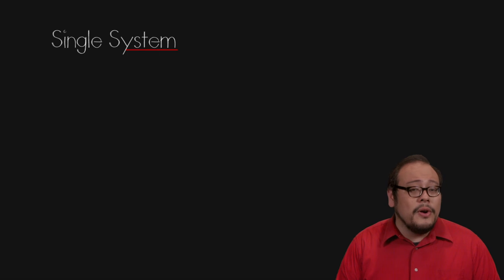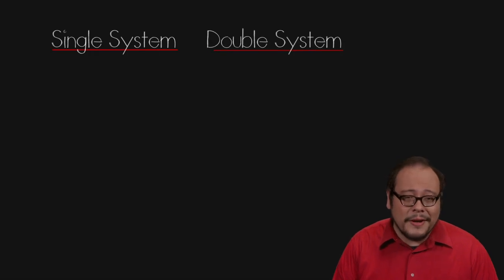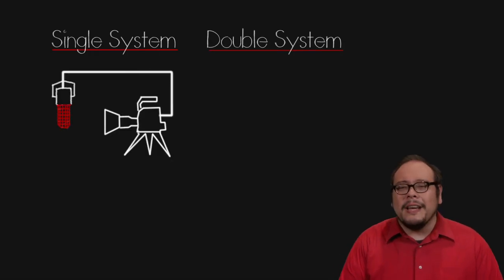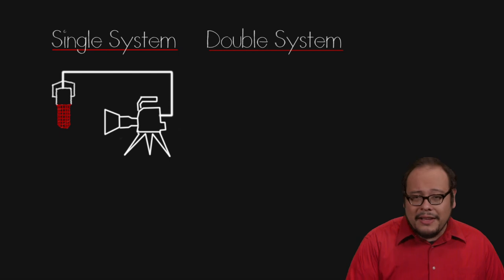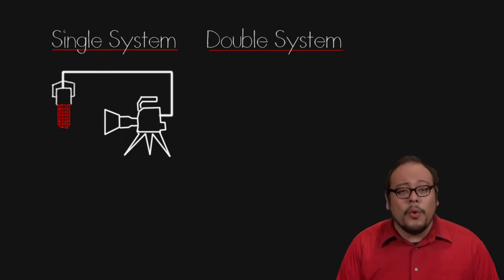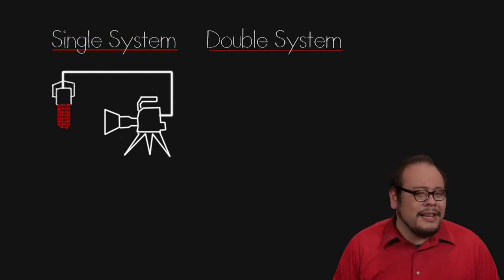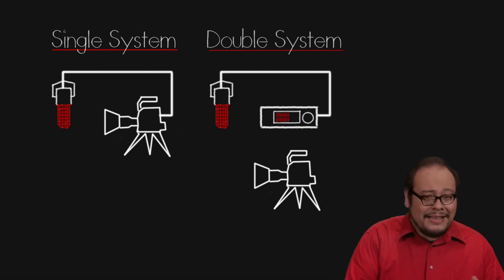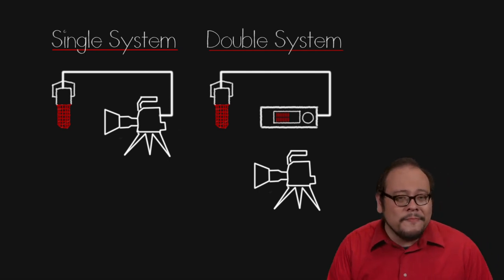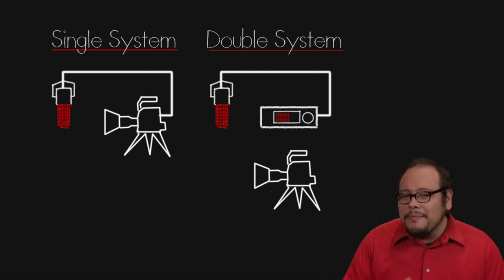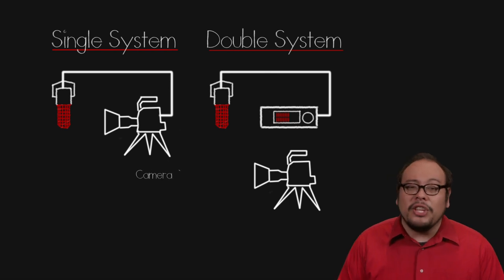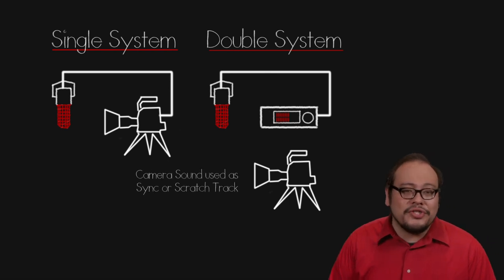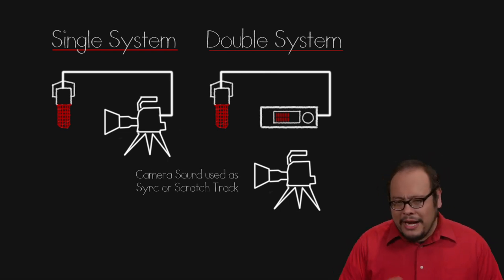The first thing you need to decide when recording digital audio for video is whether to use the single or double system for recording. In a single system setup, audio is fed directly into the camera and recorded with the image. In a double system or dual system, sound is recorded onto independent dedicated audio recorders. Sound from the camera is still being recorded if available, but used as a sync or scratch track.